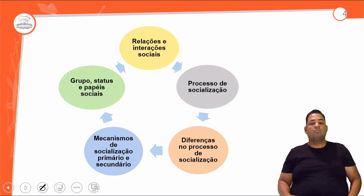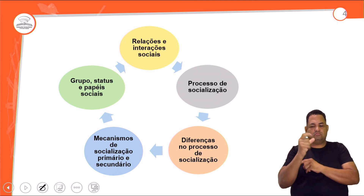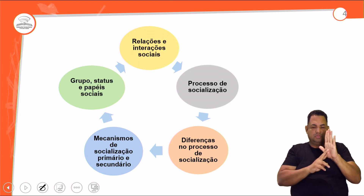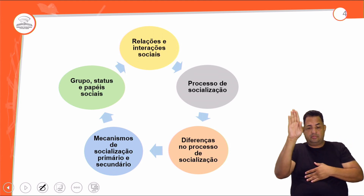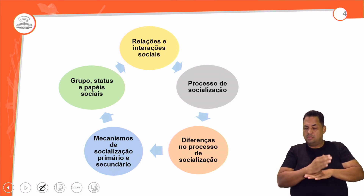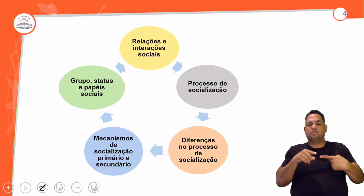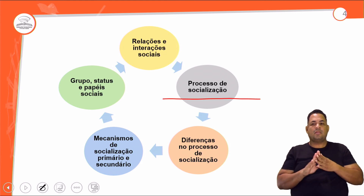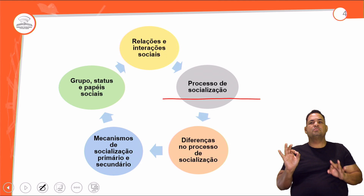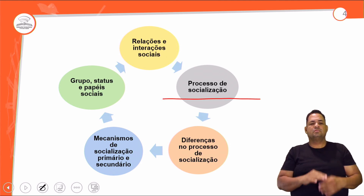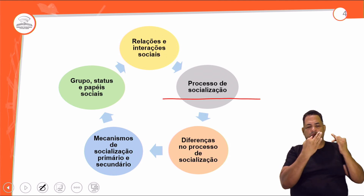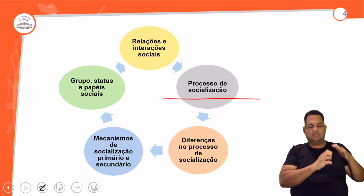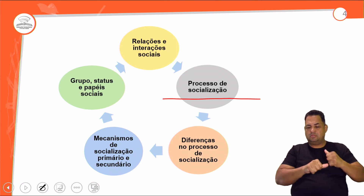O processo de socialização é esse processo onde o indivíduo aprende a ser um membro da sociedade. Ele vai aprendendo através das regras, das normas, da cultura. A cultura tem um papel essencial para o indivíduo ser um membro da sociedade, porque esse é o objetivo do processo de socialização. Quem faz esse papel são as instituições sociais: principalmente a família, a escola, o Estado e a religião.